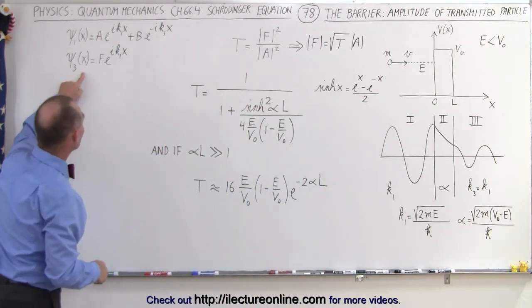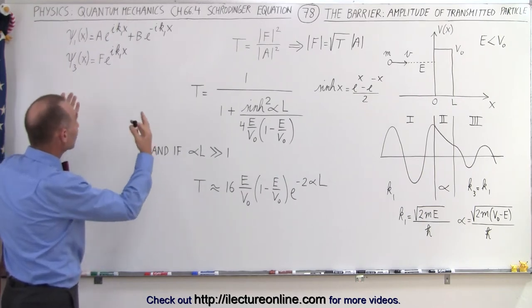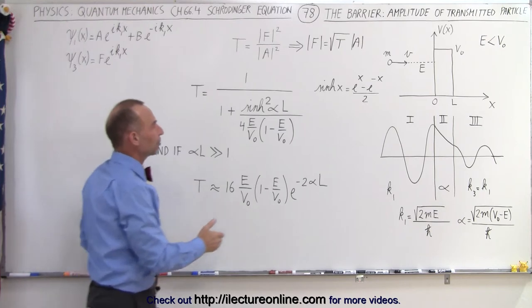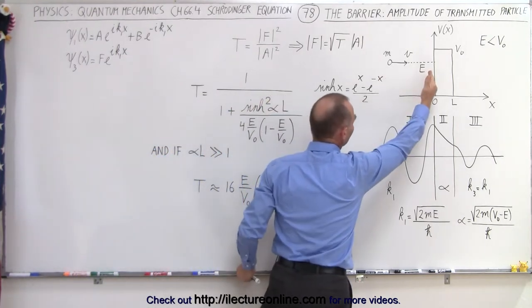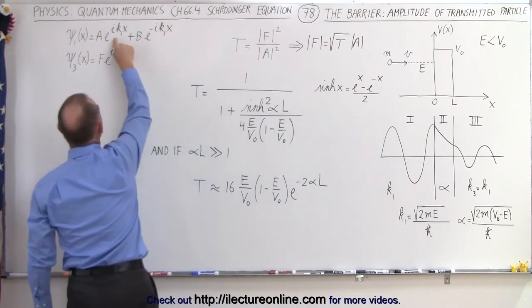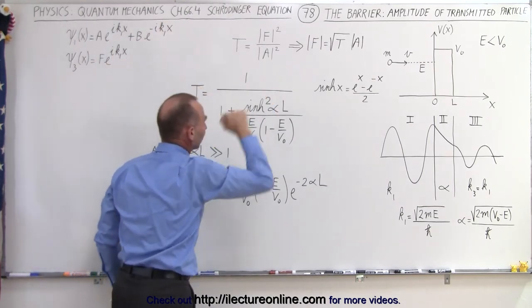So if we take a look at the equations here, the Schrödinger equation that describes the two regions, in region 1 of course we have two terms because we could have some particles that will be reflected from the barrier and move in the opposite direction. That will give us this term right here, but this term here represents all the particles moving from left to right.